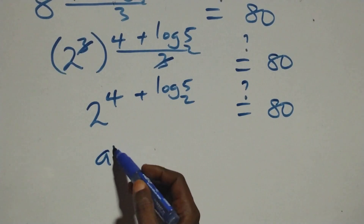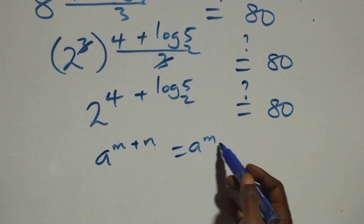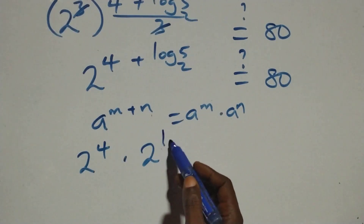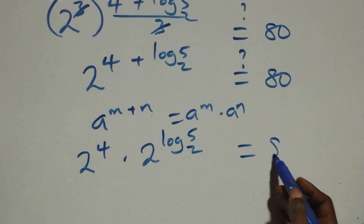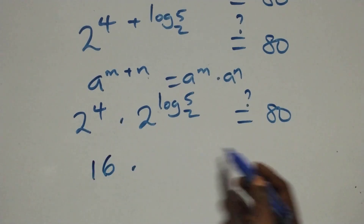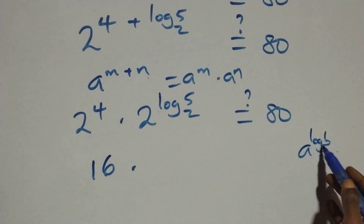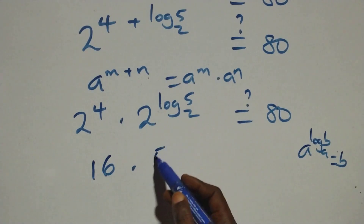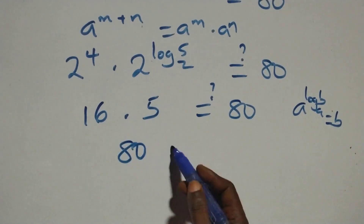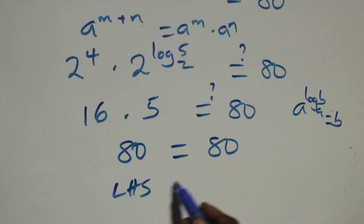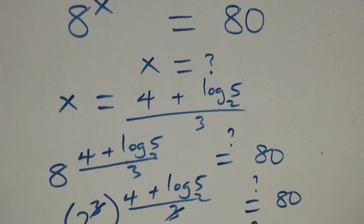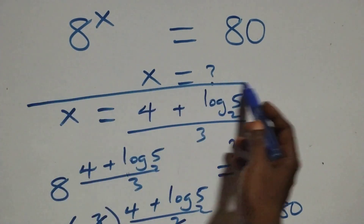Using the law of indices — a raised to power (n plus m) equals a raised to n times a raised to m — we get 2 raised to power 4 times 2 raised to power log 5 base 2. Now 2 raised to power 4 equals 16, and using the identity a raised to log b base a equals b, we get 2 raised to log 5 base 2 equals 5. So 16 times 5 equals 80. Left hand side equals right hand side, confirming x equals (4 plus log 5 base 2) over 3 satisfies the equation.